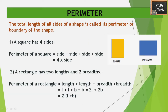Next, let us see boundary, that is perimeter. The total length of all sides of a shape is called its perimeter or boundary. A square has 4 sides, so the perimeter of a square is side plus side plus side plus side, which is 4 into side.